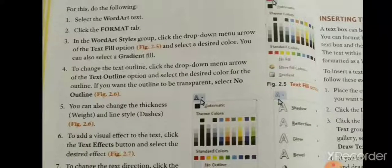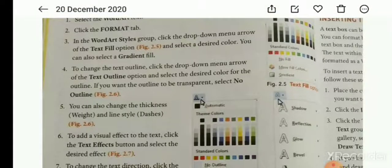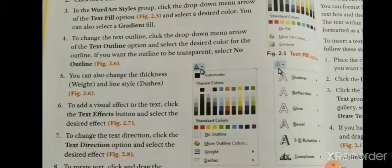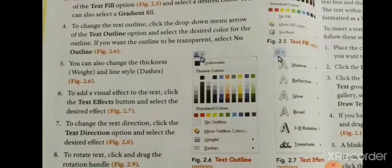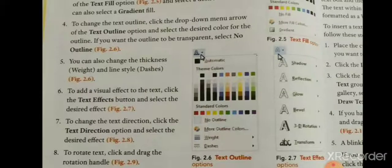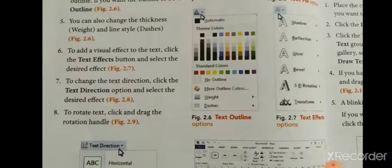If you want the outline to be transparent, select No Outline. You can also change the thickness and line style. To add a visual effect to the text, click the Text Effect button and select the desired effect. To change the text direction, click the Text Direction option.